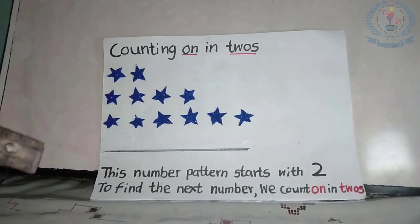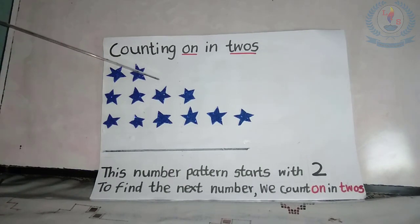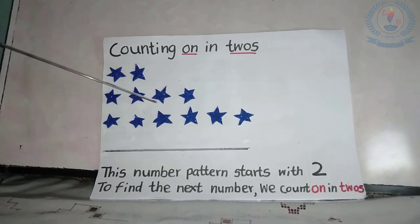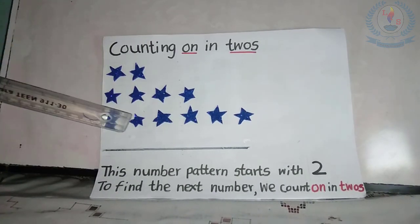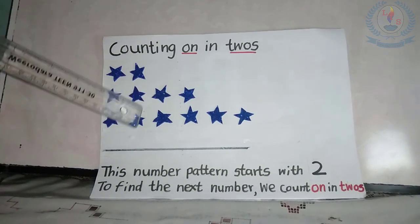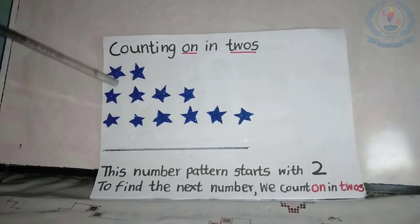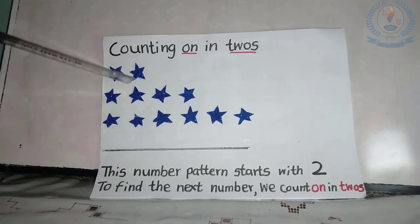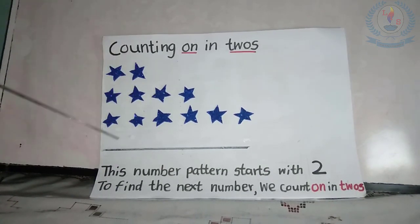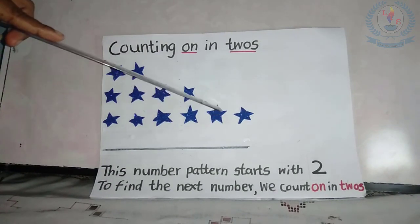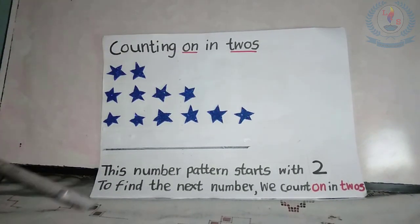Look at the next number pattern. How many stars are there? There are 2 stars in the first row. The second row, there are 4 stars. The third row, there are 6. Do you know what has happened in this number pattern? Yes, the number of stars in each row is 2 more than the previous row. So, what comes next? Yes, we can find the answer by using the number track.